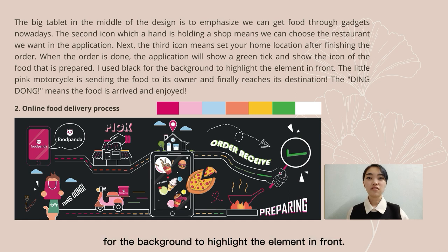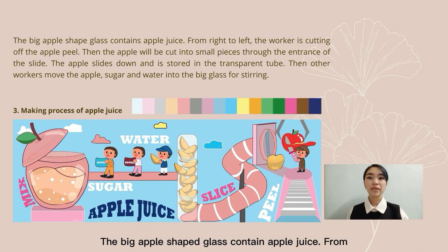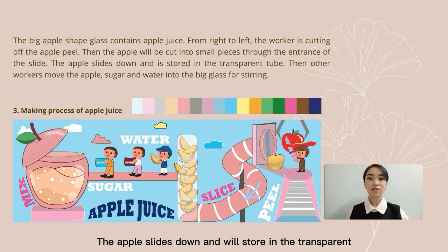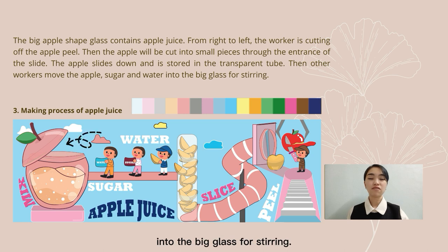I use black for the background to highlight the elements in front. Next, apple juice. The big apple-shaped glass contains apple juice. From right to left, the character is cutting off the apple peel. Then the apple will be cut into small pieces through the entrance of its light. The apple juice is now stored in the transparent tube. Then other characters move the apple sugar water into the pink glass for storage.